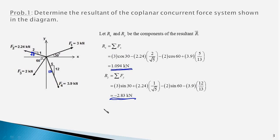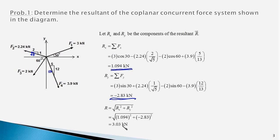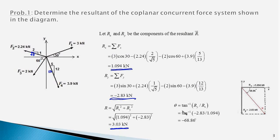We now have the X and Y components of the resultant R and can combine them to get the magnitude. The magnitude is the square root of Rx squared plus Ry squared. Plugging in the values, we get the magnitude as 3.03 kilonewtons. Its direction can be found from the inverse tangent equation, yielding minus 68.86 degrees, which can be graphically shown as the resultant of 3.03 kilonewtons making an angle of minus 68.86 degrees with the x-axis.